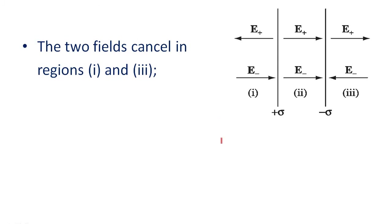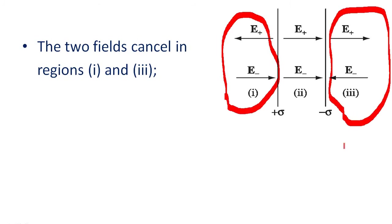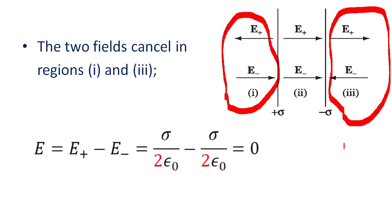Looking at regions one and three: the two fields are equal in magnitude but in opposite directions, so they cancel each other. The total field in region one and region three equals E-plus minus E-minus, which is sigma over two epsilon zero minus sigma over two epsilon zero, equal to zero.